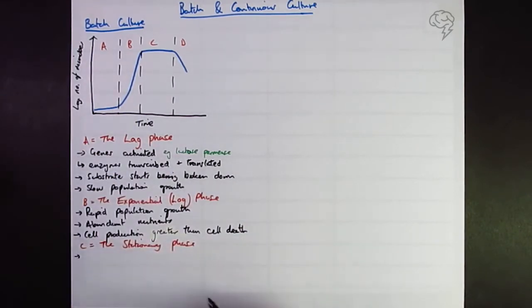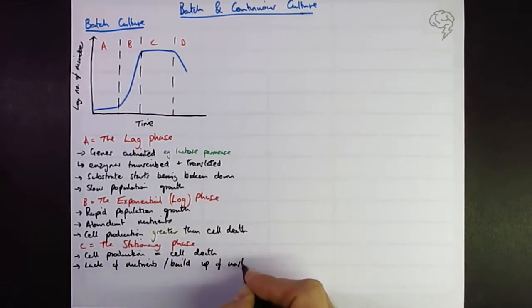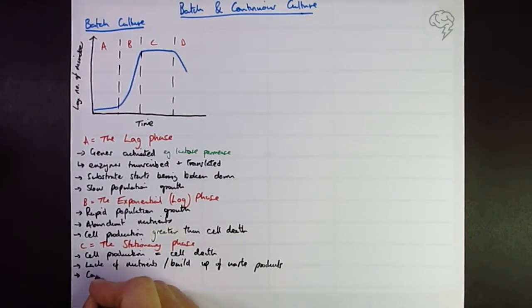So what we say here, we can say cell production is the same as the rate of cell death. We can say this is because there's a lack of nutrients or a build-up of waste products. You could also mention this being the carrying capacity, which if you need to know what that means, it's the maximum population that an ecosystem can maintain.